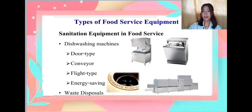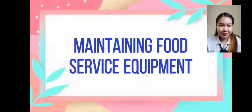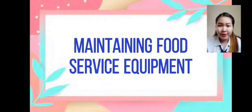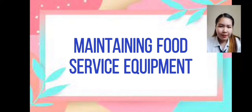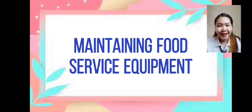Waste disposal is a device, usually electrically powered, installed under a kitchen sink between the sink's drain and the trap. The disposal unit shreds food waste into pieces small enough — generally less than 2mm — to pass through. Managing a restaurant kitchen is much more than overseeing the staff and placing food orders; all the equipment, systems, and services in a commercial kitchen require routine maintenance.